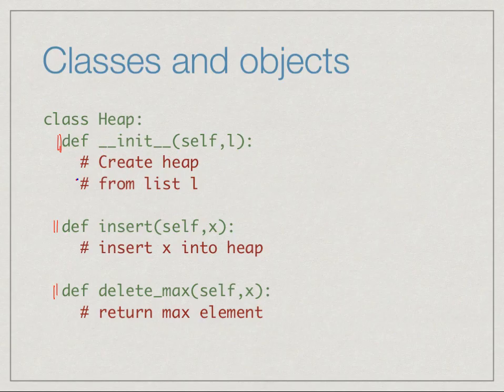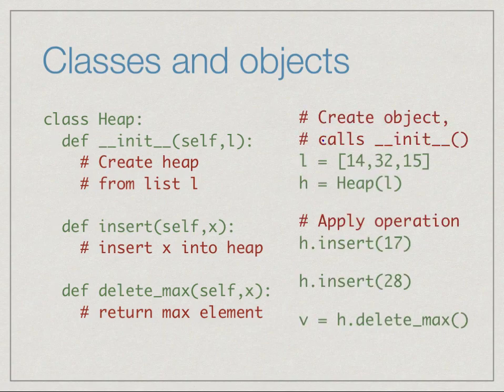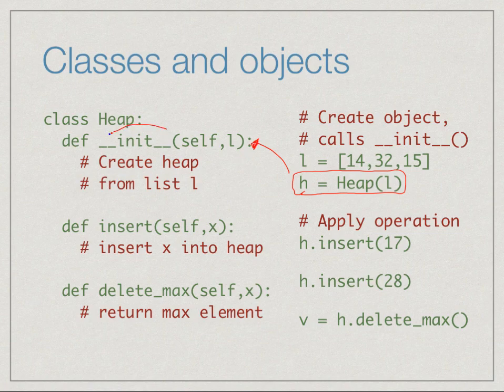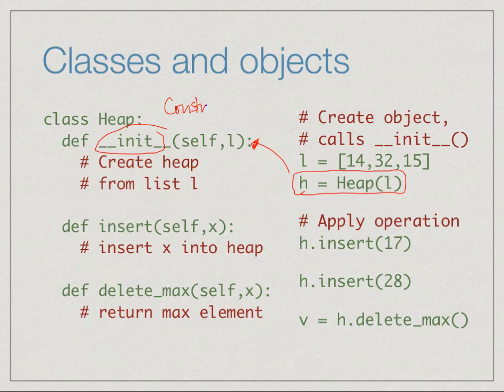To get an idea about how this would work, when we create an object of type heap, we call it like a function. We say h is equal to heap(L). This implicitly says, give me an instance of the class heap with the initial value L passed to it. This calls this function init, which is why it is called init. Init is what is called a constructor. A constructor is a function that is called when the object is created and sets it up initially.